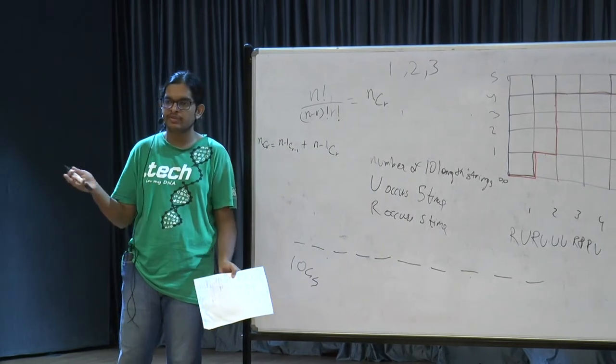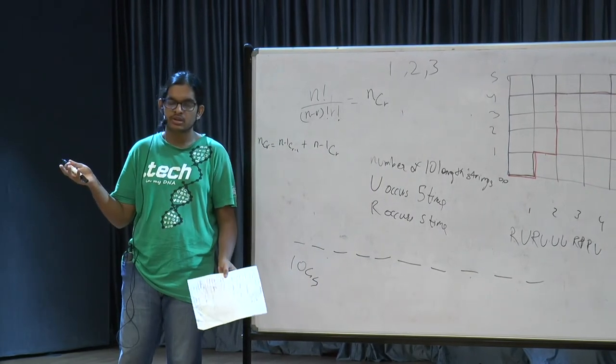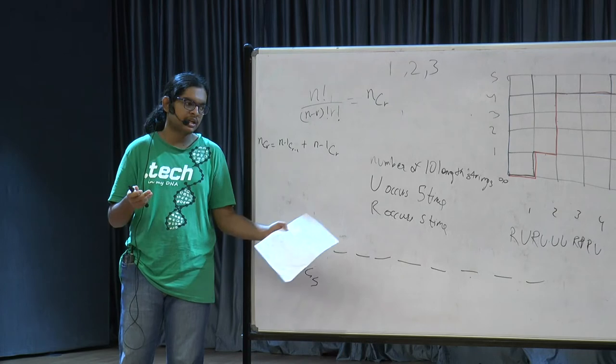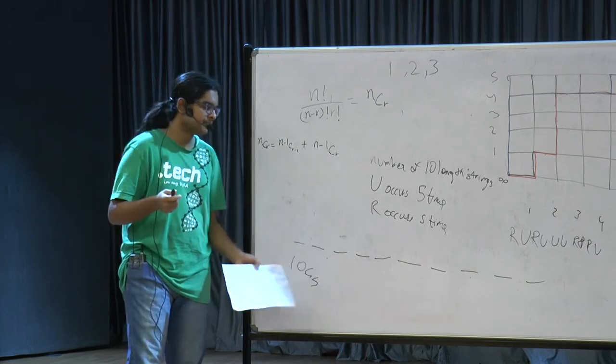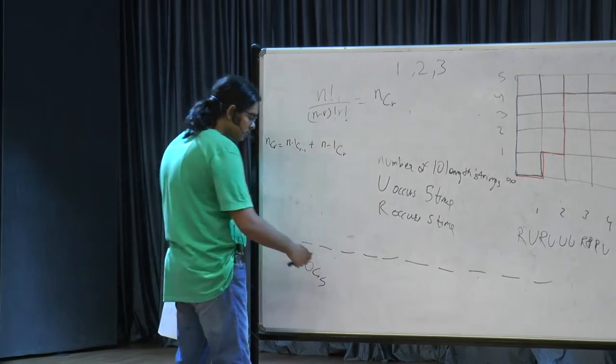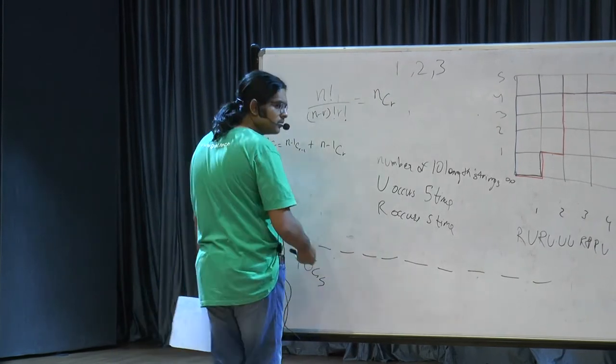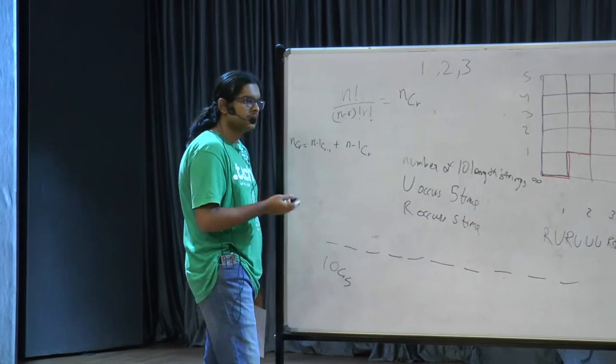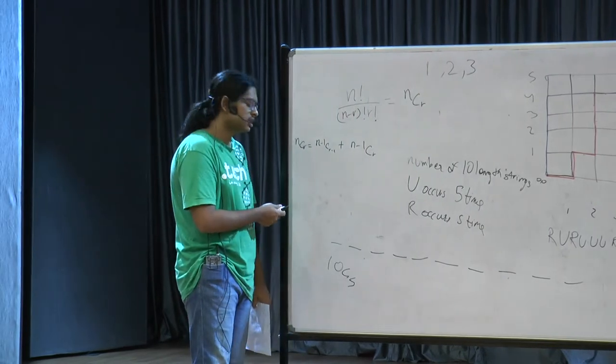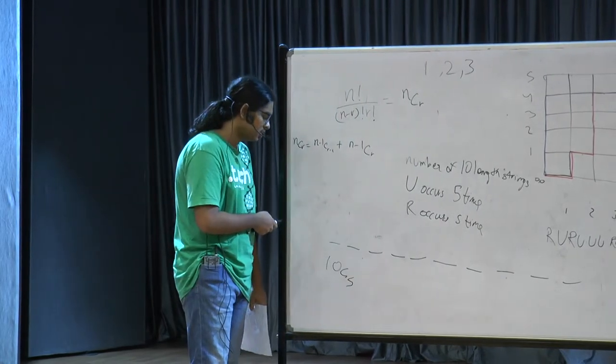Now let us encode these paths. Consider a path: you can write it as a string of 10 characters where each character is either R or U. The number of times R appears is 5 and the number of times U appears is 5. So the number of paths equals the number of 10-length strings with U occurring 5 times and R occurring 5 times. You have 10 empty slots and want to place 5 U's in them — for the remaining 5 slots we know there will be R. This is exactly equal to 10 choose 5.